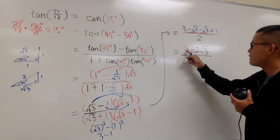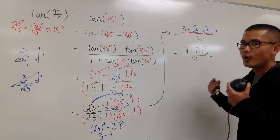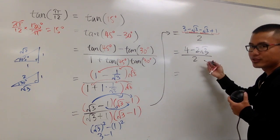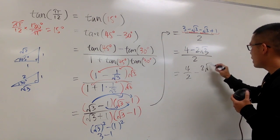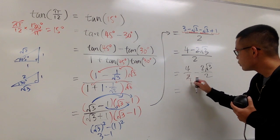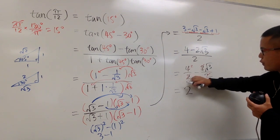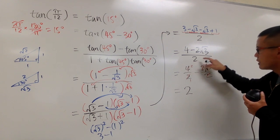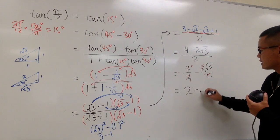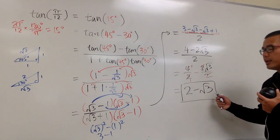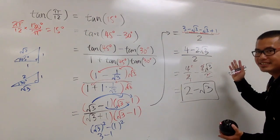Notice the top has 4 and 2, so we split the fraction: 4 over 2 minus 2 square root of 3 over 2. Reducing: 4 over 2 is 2, and 2 over 2 cancels to give square root of 3. So the final answer is 2 minus square root of 3. This is the simplest form for tangent of pi over 12, namely tangent of 15 degrees. Thank you.